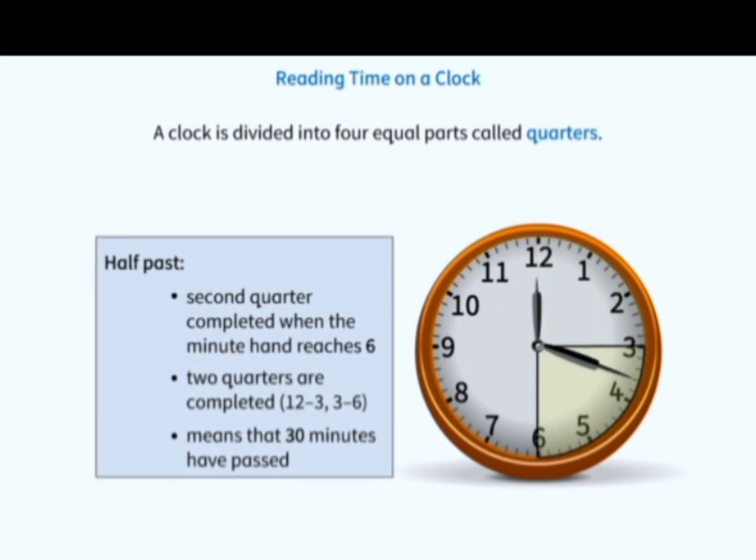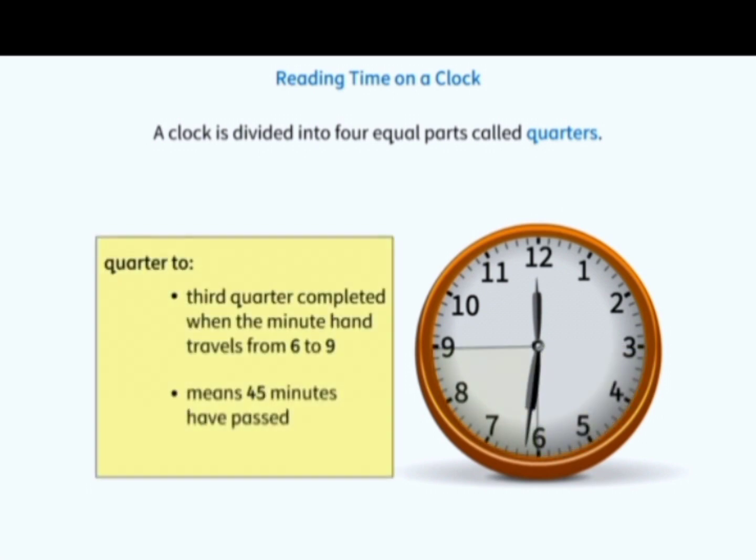The third quarter is completed when the minute hand travels from 6 to 9. It is then called quarter to. It also means that 45 minutes have passed.